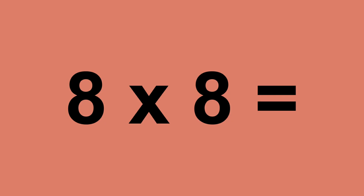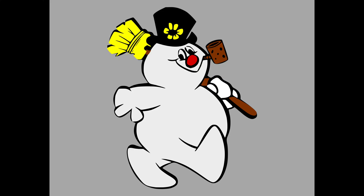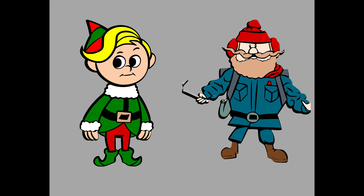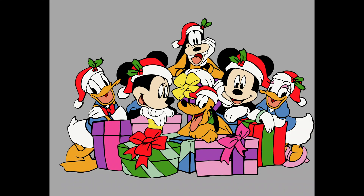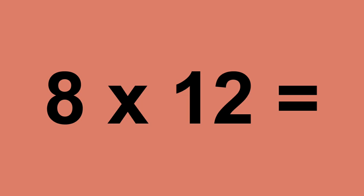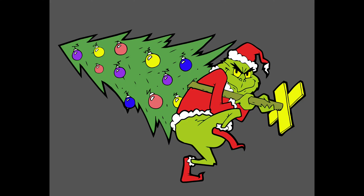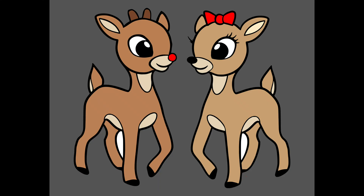Eight times eight equals sixty-four. Eight times nine equals seventy-two. Eight times ten equals eighty. Eight times eleven equals eighty-eight. Eight times twelve equals ninety-six. Nine times zero equals zero. Nine times one equals nine. Nine times two equals eighteen.